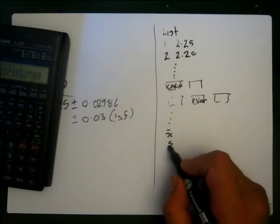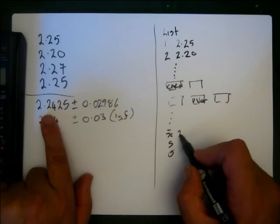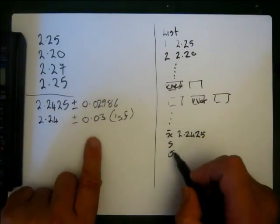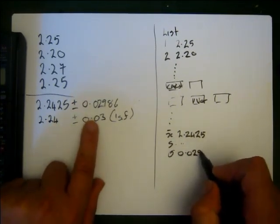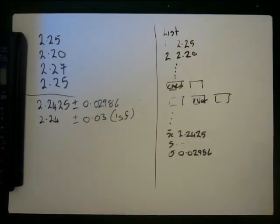then you'll get an s, then you'll get sigma. And the x bar will be average 2.2425, and this one will be 0.02986. So that's how you're going to get your standard deviation using a graphing